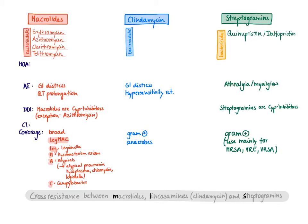The coverage is generally broad. A useful mnemonic for first-line uses is LAG-MAC. LAG stands for Legionella — macrolides and Legionella are a first-line combination. MAC reminds you of macrolides: M stands for Mycobacterium avium complex, a pneumonia mainly affecting immunocompromised patients, particularly those with HIV. A stands for atypicals — anything causing atypical pneumonia including Mycoplasma, Chlamydia, and again Legionella. C stands for Campylobacter, the number-one bacteria causing enteritis, which is best covered with macrolides.